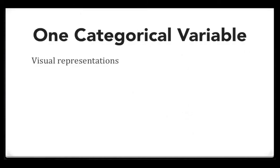Let's begin by looking at one categorical variable. This week we'll see three different visual representations that can be used with one categorical variable. We'll go through these quickly here.